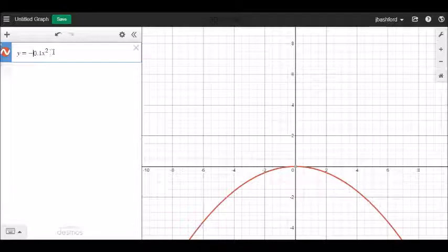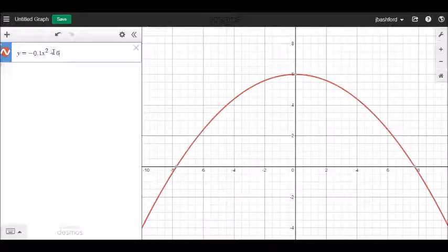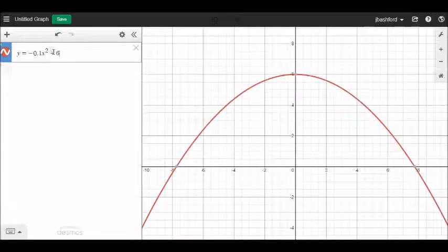So all sorts of things you can do with this function and you could also add numbers and if I add six to it there we go shifted up the graph six places. Also useful to know that in Desmos you can restrict the values of x or the values of y for which this function is valid.